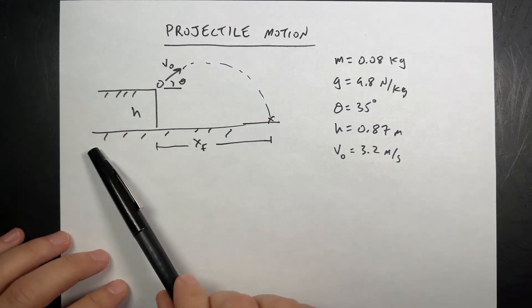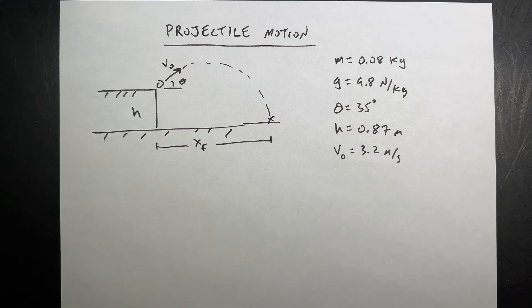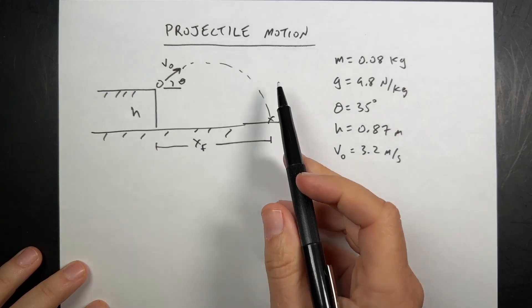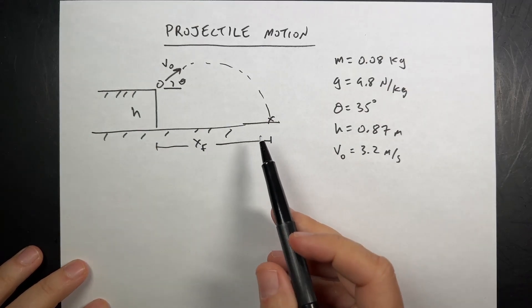Your basic projectile motion problem. I'm going to go through all the details. So here's the problem. I made this up. Ball is launched off a table.